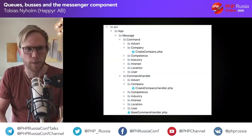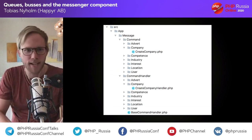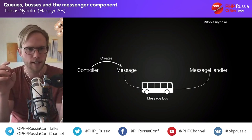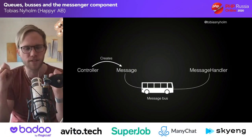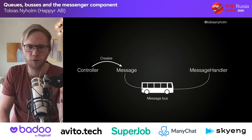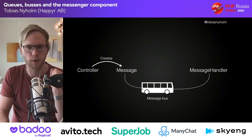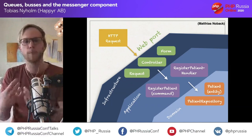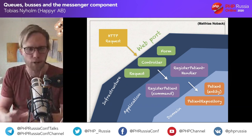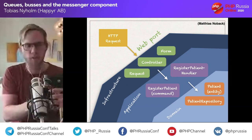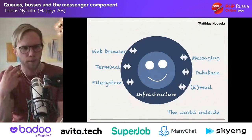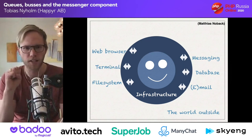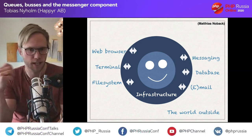So I created messages all over the place — messages for 'create company' with a corresponding create company handler. The only thing my controller does now is take something from HTTP and create a message. It puts the message on the bus, the bus finds the message handler, and the handler is executed. The bus is now a boundary between the real world and my application. If I want the same functionality as a CLI command, I take the CLI arguments, convert them to the same message, and put it on the bus. My core is not connected to Symfony, not connected to HTTP — it's just PHP and my code.